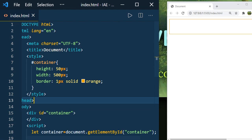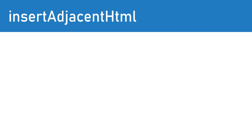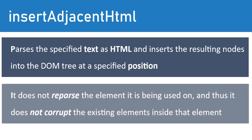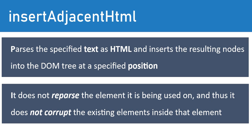Hello everyone, welcome to another session of DOM manipulation. In this session we discuss the insertAdjacentHTML method. Basically, the insertAdjacentHTML method parses the specified text as HTML and inserts the resulting nodes into the DOM tree at a specified position. The best part of using this method is it doesn't reparse the element it is being used on, and therefore it doesn't corrupt the existing elements inside it. Let us see how insertAdjacentHTML works and why it is better than the innerHTML method.